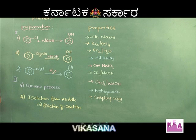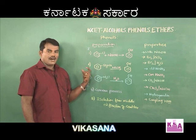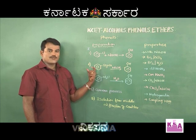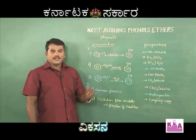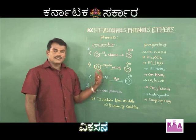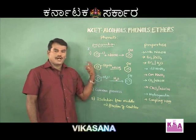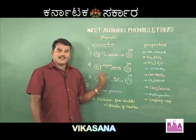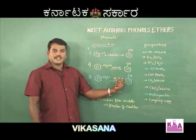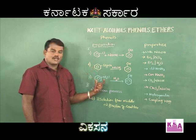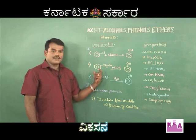The third method starts from diazonium salts. Benzene diazonium chloride upon boiling with water gives phenol. Benzene diazonium chloride (BDC) is obtained by a process called diazotization, where a primary aromatic amine is treated with an ice-cold solution of NaNO₂ and dilute HCl, forming the diazonium salt.